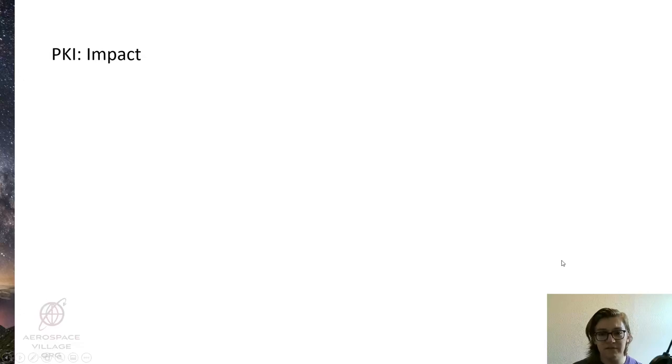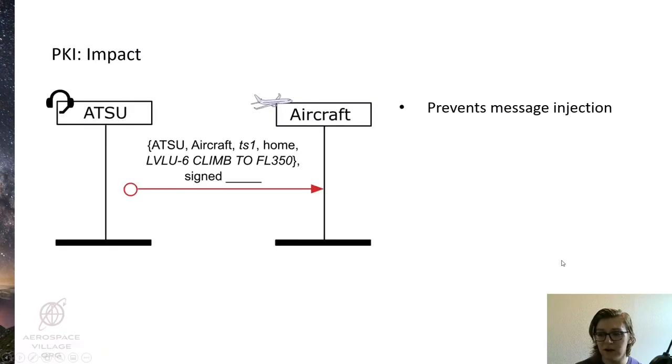This system has a number of impacts, the first being that it prevents the basic message injection attacks that we saw at the start. Here we see the same attempted message injection attack as we saw at the beginning, except that the attacker does not have the key for the ATSU, so it's unable to provide the signature.